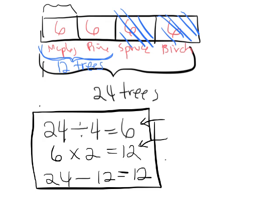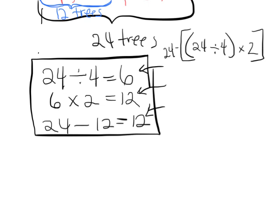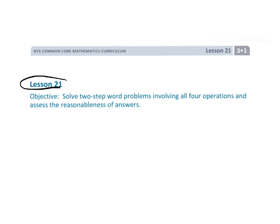If we were really crazy and we wanted to try and put that all in a single equation, ooh boy, that would be fun. We could do 24 divided by four, take that answer, multiply by two, and take that answer and subtract it from 24. So, oh my goodness, that would be the official, for your really high-performing kids, that would be the official equation: 24 minus 24 divided by four times two. And there you go. And that is Lesson 21.